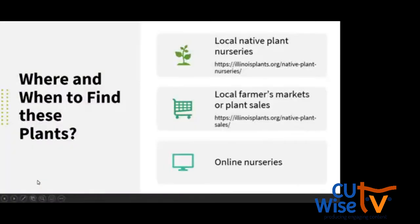Before looking at examples of those plants, let's talk about where and when you can find and buy them. Unfortunately the timing of this webinar coincides with many plants being currently sold out. Native plants have been increasing in popularity very rapidly, and they sell out quickly. The Illinois Native Plant Society has lists of local native plant nurseries — not just in Illinois but in surrounding states as well — along with a regularly updated list of native plant sales. If you have no idea where to start, I recommend visiting their webpage.